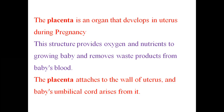During pregnancy, an organ develops inside the uterus called the placenta. This structure provides oxygen and nutrients to the growing baby and removes waste products from the blood. The placenta attaches to the wall of the uterus, and the baby's umbilical cord arises from it.